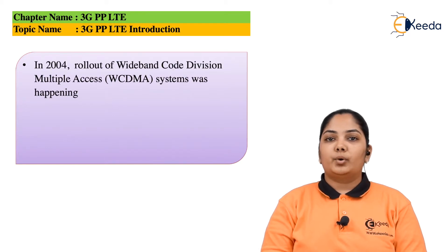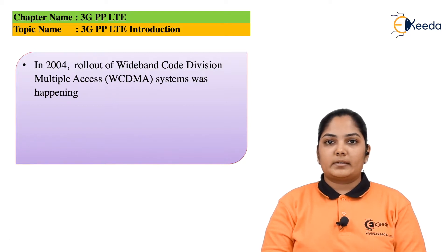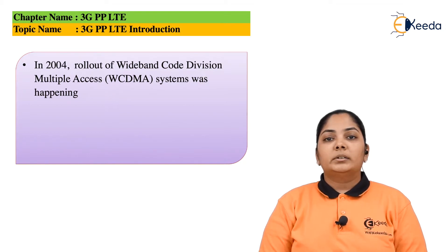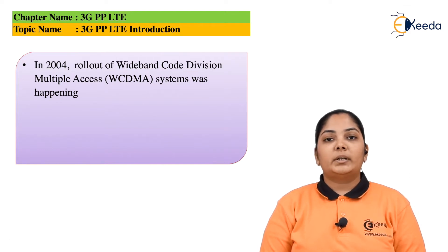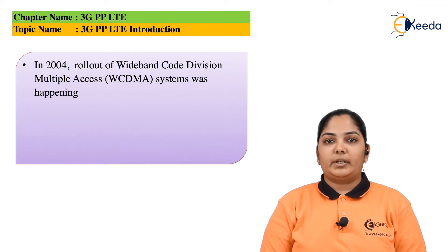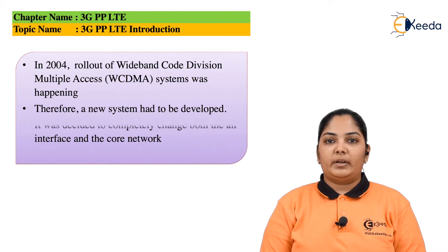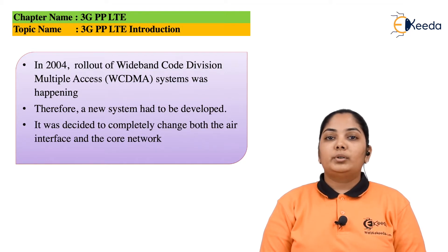In 2004, when there was a rollout for the wideband code division multiple access or WCDMA, the 3GPP industry had already started to work on the fourth generation systems. It was predicted at that time that the data rates and the spectral efficiency of the WCDMA would not meet the demands of future applications, and hence a new system had to be developed. It was decided to completely change both the air interface and the core networks of the system.